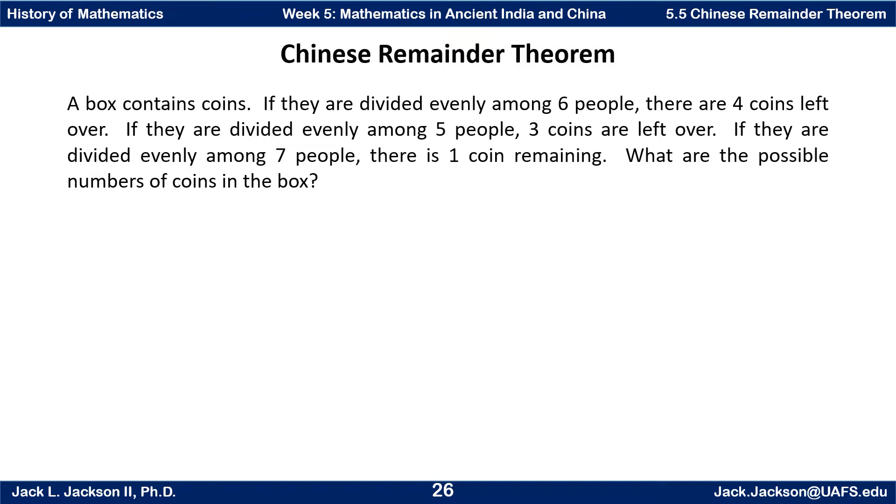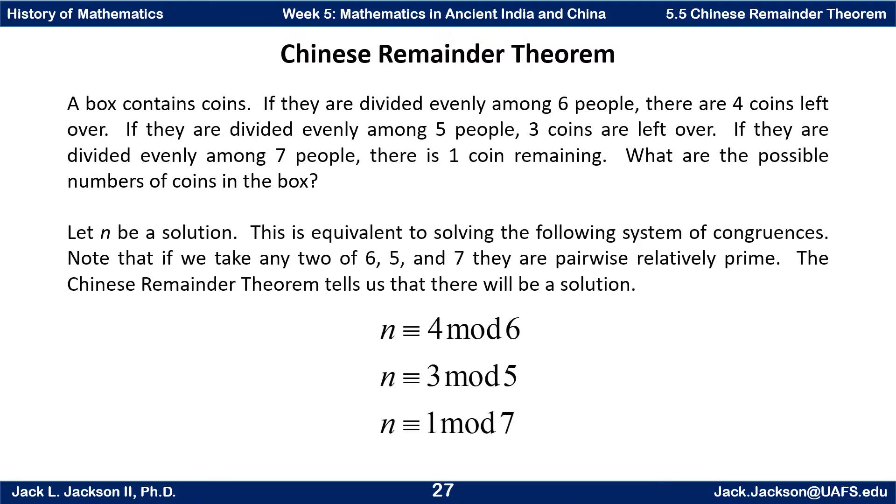Here's the problem. A box contains some coins. If they're divided evenly among six people, then there are four coins left over. If they're divided evenly among five people, three coins are left over. And if they're divided evenly among seven people, there's one coin remaining. What are the possible numbers of coins in the box?